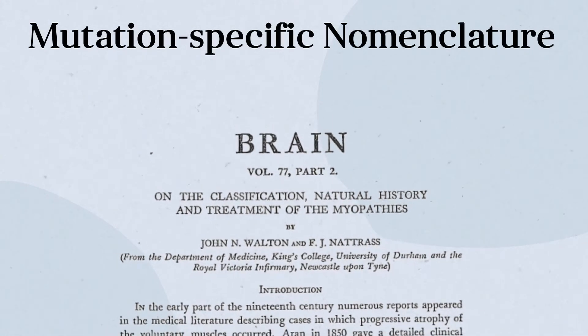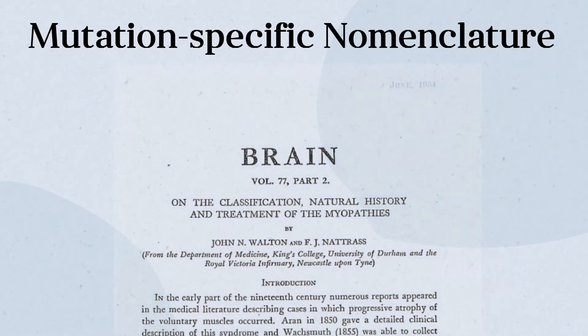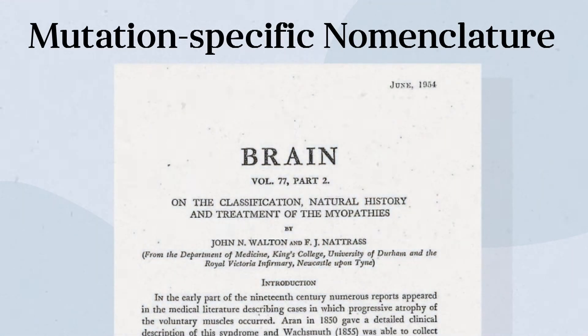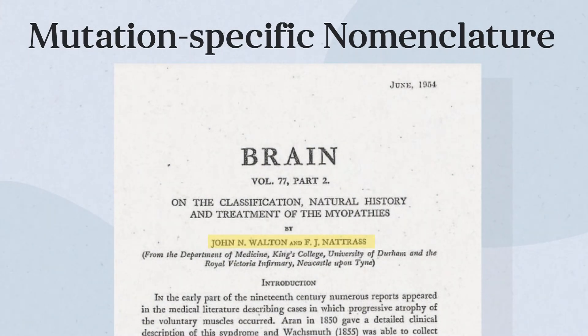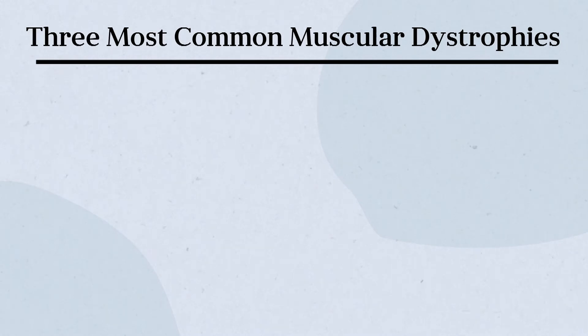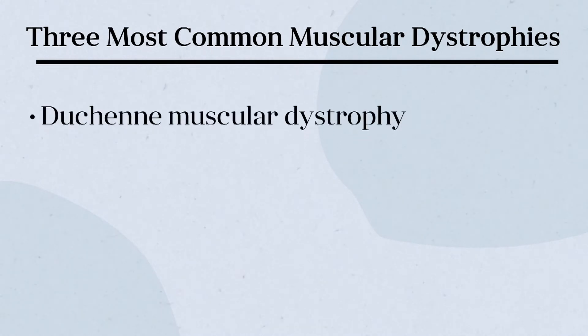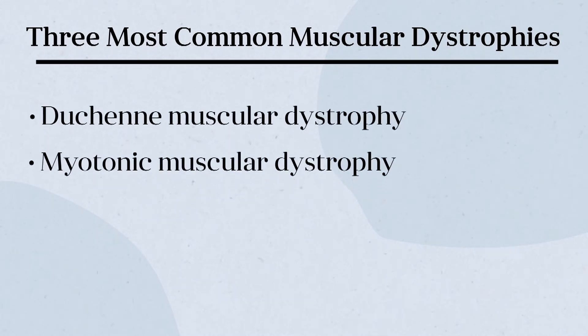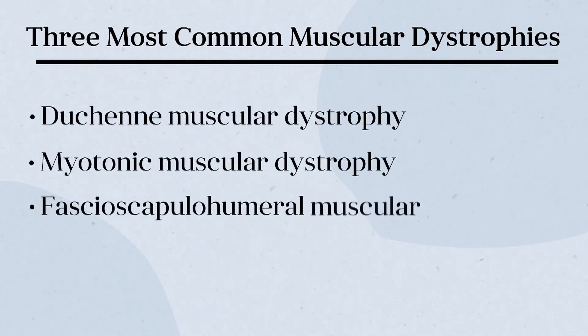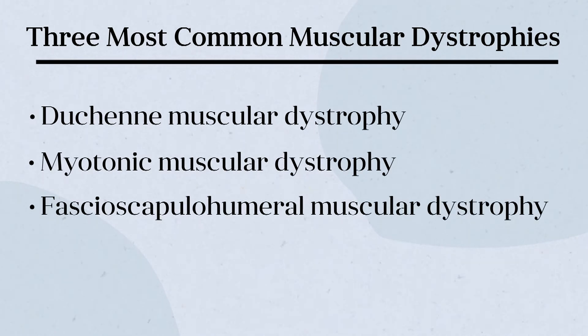The limb-girdle muscular dystrophies were first described in the 1950s by Walton and Natris, who distinguished them from the three most common muscular dystrophies: Duchenne muscular dystrophy, myotonic muscular dystrophy, and facioscapulohumeral muscular dystrophy.